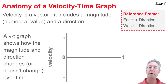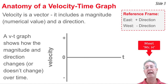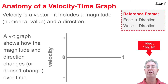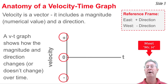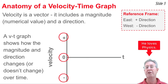Velocity is a vector — it has a magnitude and a direction such as east or west. When plotting directions, we choose a reference frame: moving east is a positive velocity and moving west is a negative velocity. On a velocity-time graph, there's always a zero mark, with a positive region above and a negative region below for eastward and westward velocities.